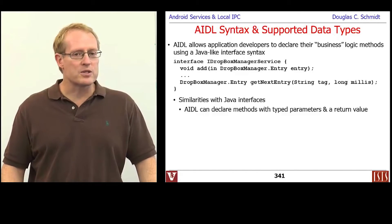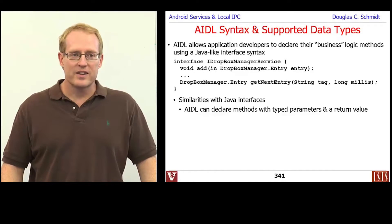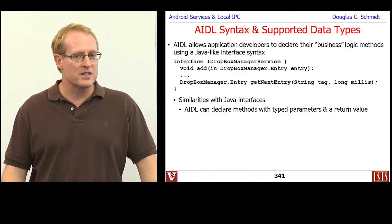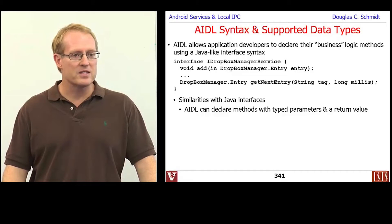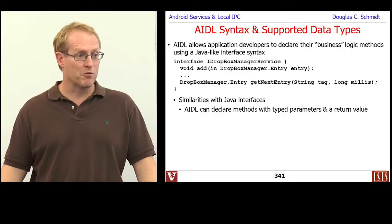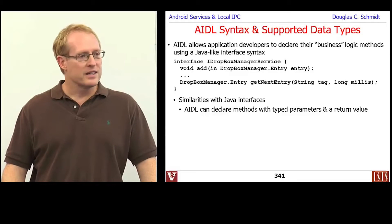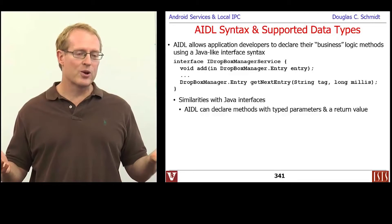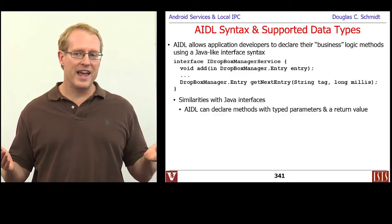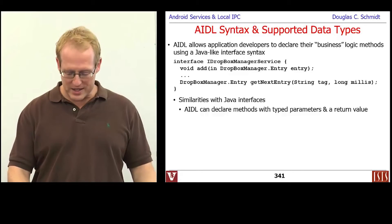Here are things that are similar with Java interfaces. If you know Java, you know it's possible to define interfaces that have methods with typed parameters and optionally a return value. You can also have void to not return anything, but it's common to have a return value of some kind. Pretty much everything you know about Java interfaces will apply to AIDL, with a few key exceptions.